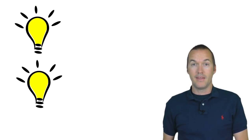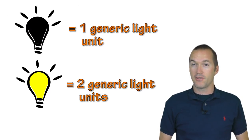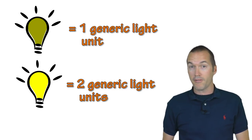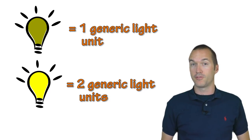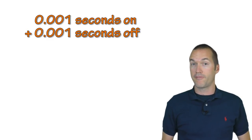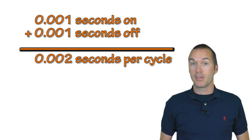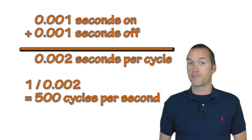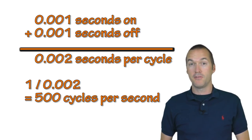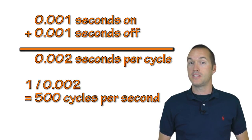If you were to turn a bulb on for 1 second and then off for 1 second, you would produce half the light compared to leaving the bulb on for the full 2 seconds, but you would obviously notice the bulb had turned off. If instead you turn the bulb on for a millisecond and off for a millisecond and repeat that process for a full 2 seconds, you'd notice that the bulb was 50% less bright but you wouldn't notice it was flashing. Since the lights are on for 0.001 seconds and off for 0.001 seconds, the whole cycle takes 0.002 seconds, meaning we can complete 500 of these cycles in 1 second — which is called its frequency, measured in Hertz. Since we do 500 cycles per second, this is a frequency of 500 Hertz.